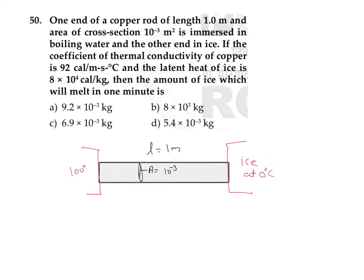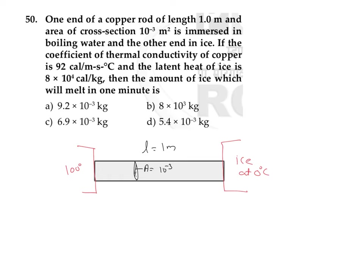The coefficient of thermal conductivity of the copper rod is k = 92 calorie per meter per second per degree Celsius. We can convert this into SI units by multiplying by 4.2 joules, since we are going to do everything in the SI system.